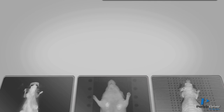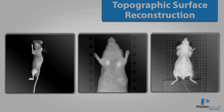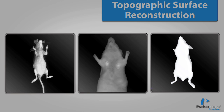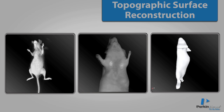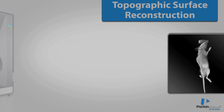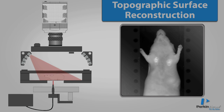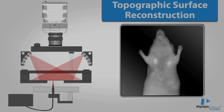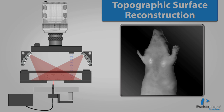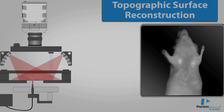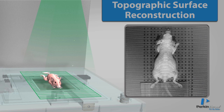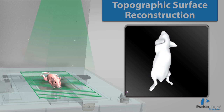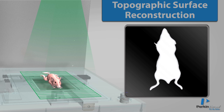The first step to 3D fluorescence tomography is to define the surface topography of the animal. Depending on the instrument, different methods are used to determine these surface reconstructions. The FMT uses 2D photographic images to approximate the boundaries of the animal and ultrasound to determine the height, which are combined to build up a 3D surface. The Spectrum uses a laser galvanometer to obtain a structured light contour map, which is then translated into a surface reconstruction.